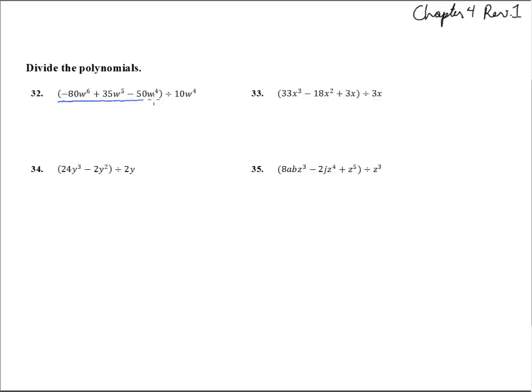So here we're going to divide this whole thing by 10w to the 4th. The first one divides by 10w to the 4th, first one is going to give us negative 8, and then w to the 6th over w to the 4th is w squared.